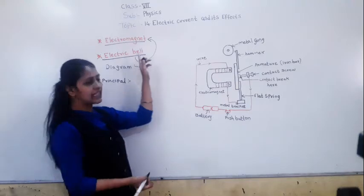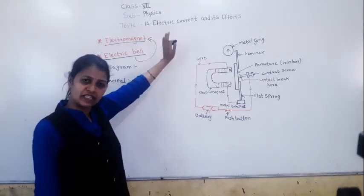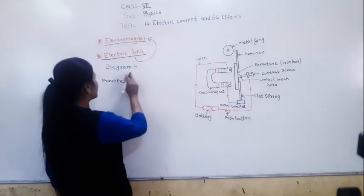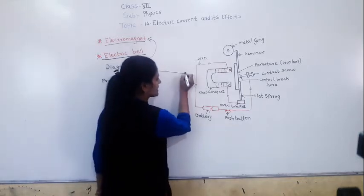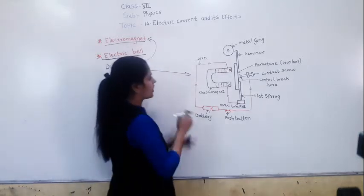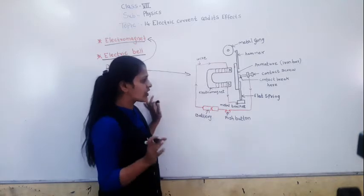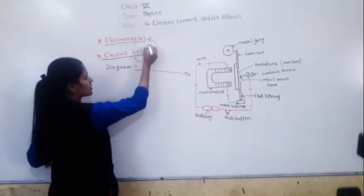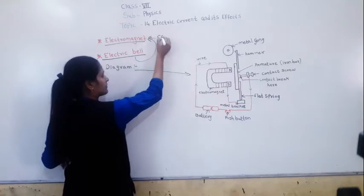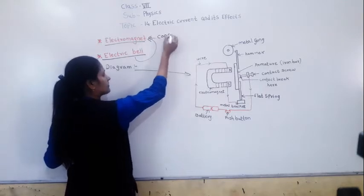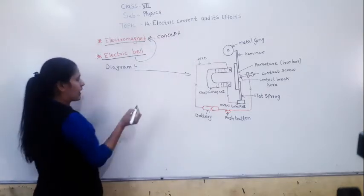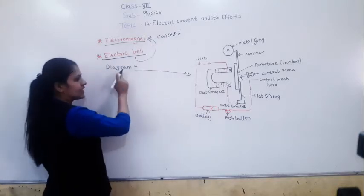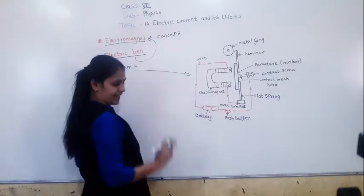After writing the principle, you have to draw the diagram. So draw this diagram. After drawing the diagram, you will explain the concept. The electric bell works on the principle of electromagnet. Then you will draw this diagram, and after the diagram you will write the construction and then the working.